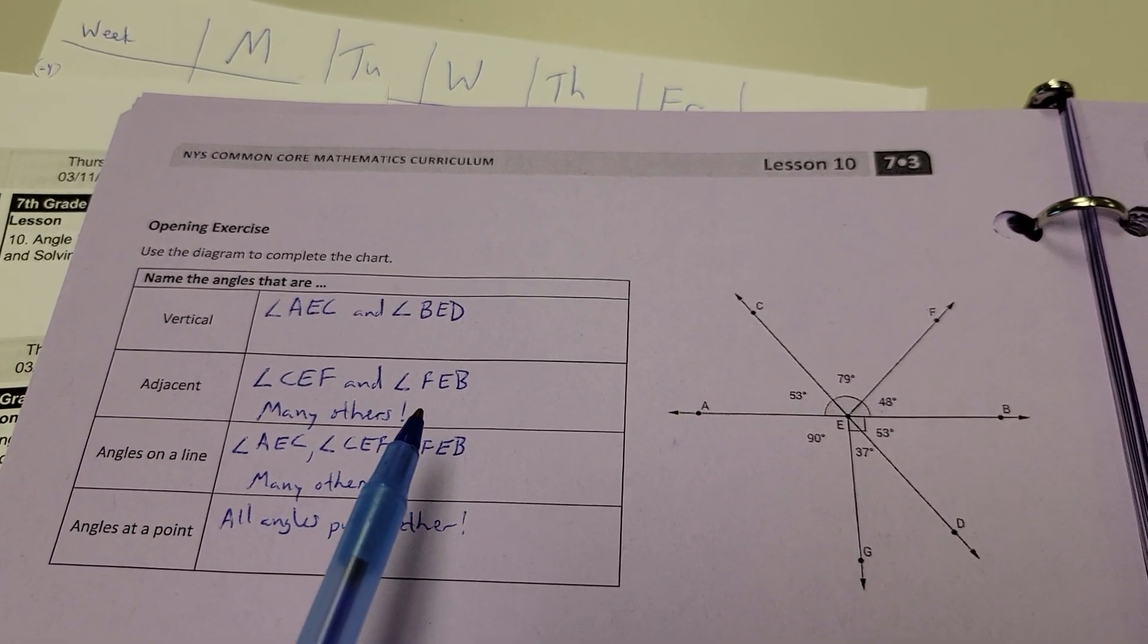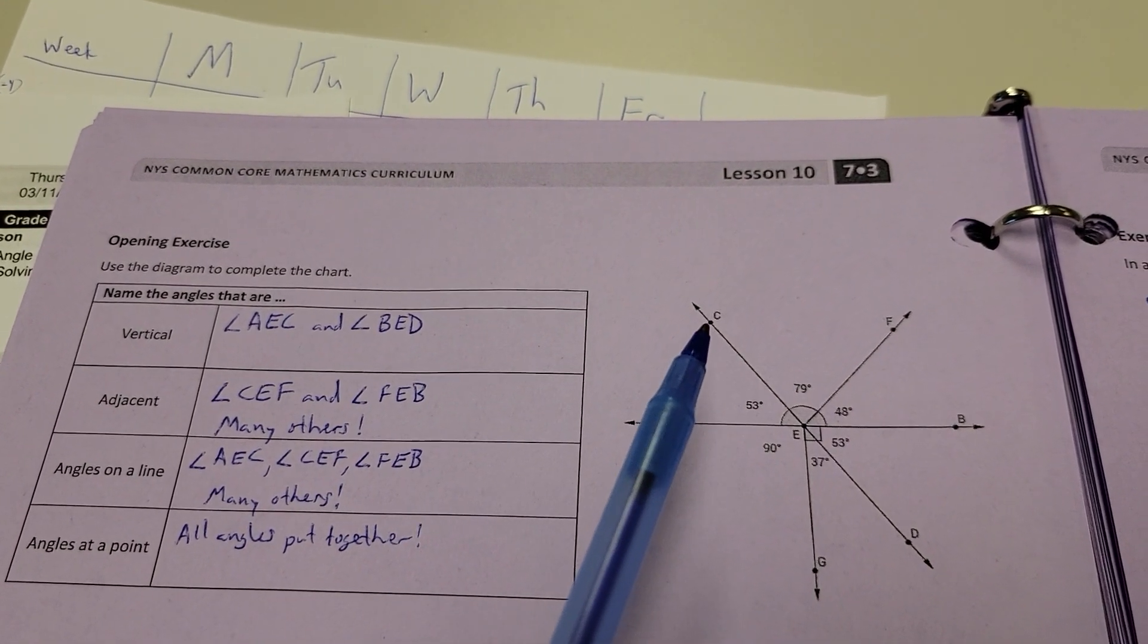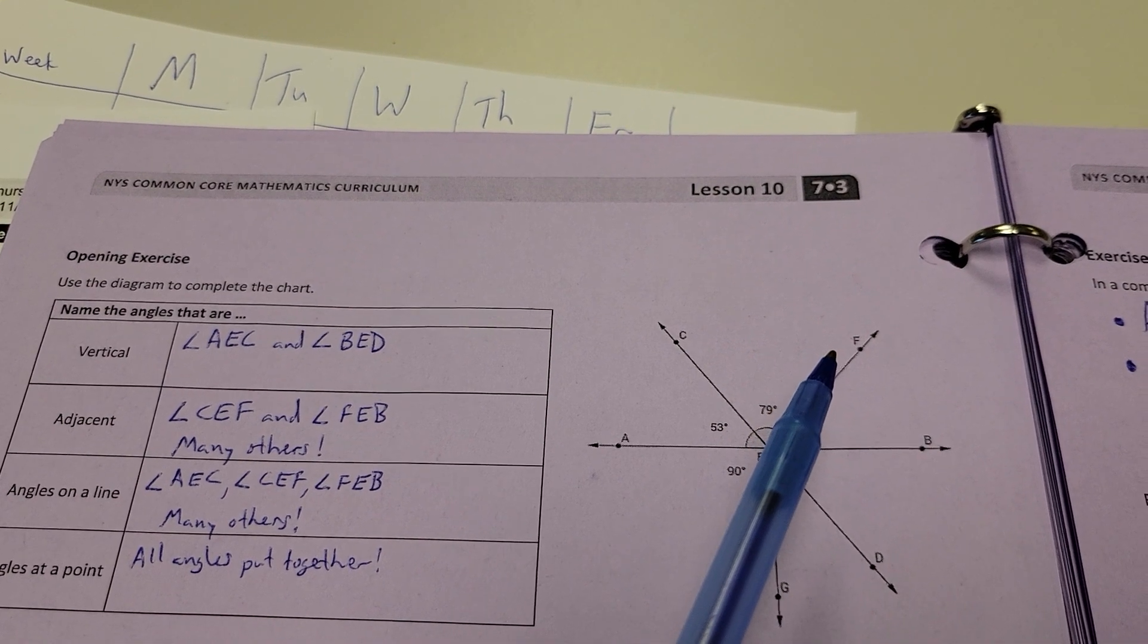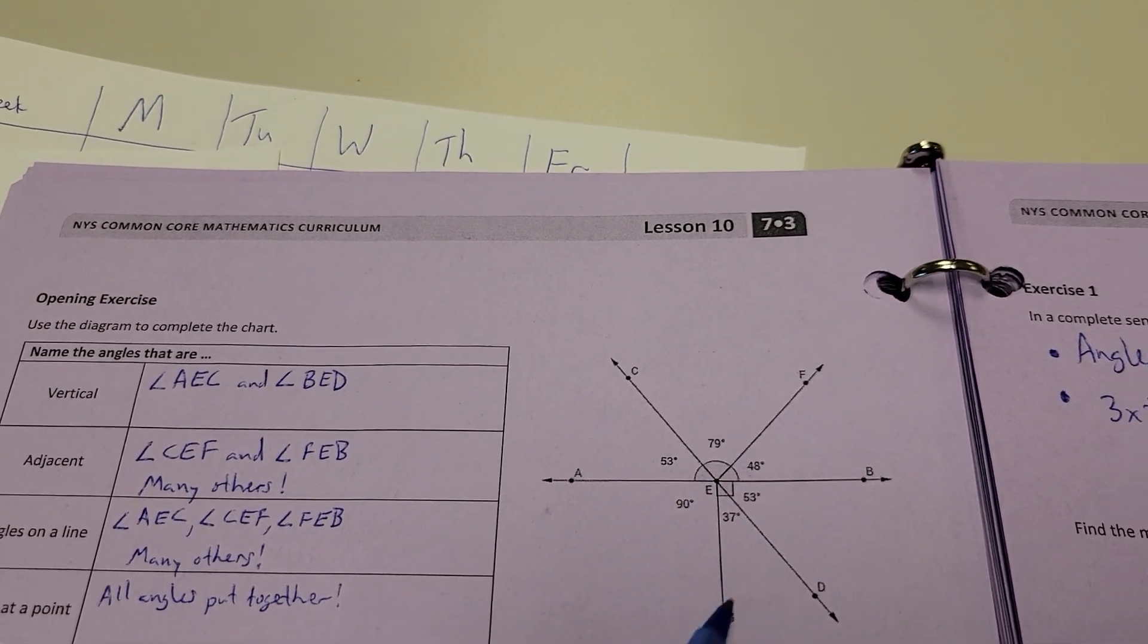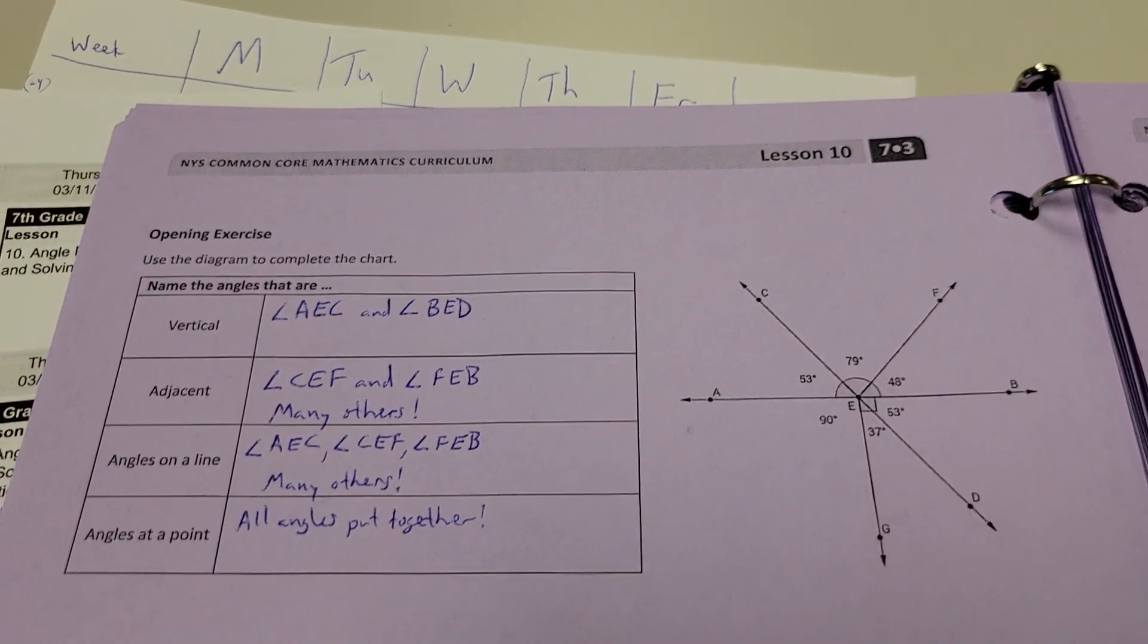Adjacent angles. There's lots of them here. I just went with an easy one. Angle CEF and angle FEB. So, these two angles are right next to each other. You've got lots of pairs that are next to each other here. So, that's just an example.